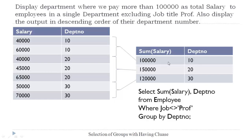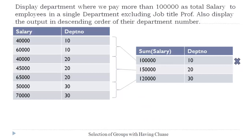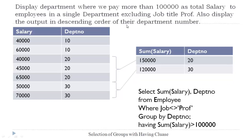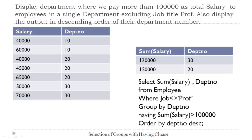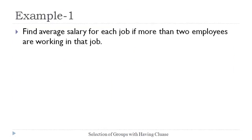But here we have to select only those groups where total salary is more than 1 lakh, so we have to discard the groups that don't qualify. In order to discard those groups we use the HAVING clause. Then finally, we arrange the records in descending order of department number by adding the ORDER BY clause. So the complete query to perform this operation includes WHERE, GROUP BY, HAVING, and ORDER BY clauses.